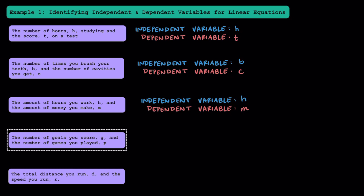The number of goals you score, G, and the number of games you played, P. Does the amount of goals you score depend on how many games you play, or do the games depend on how many goals you score? The goals you score is going to depend on how many games that you play. If you play more games, you're going to have more opportunities to score more goals. If you only play one or two games, you're only going to be able to score so many goals.